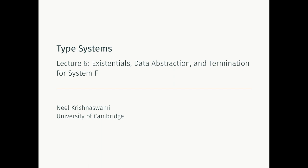Hello and welcome to lecture six of type systems. In this lecture we're going to learn about existential types and how to use them for data abstraction, and we're going to extend the termination proof for the simply typed lambda calculus and System T to termination of full System F. This is one of the highlight results of programming language theory, and I'm really excited to talk about it.